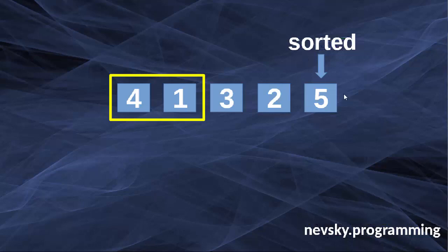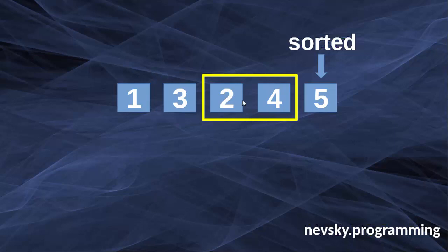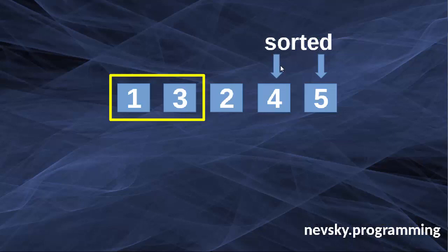After this first iteration we have one number that is sorted — in this case it's number 5 — so we do not need to work with it anymore. Now let's start the next iteration. Number 4 is greater than number 1 so we swap them. We also swap numbers 3 and 4, and numbers 2 and 4. This example was made to be a little bit difficult so that we can see more easily how bubble sort actually works. That's the end of the second iteration, in which we've sorted another element.